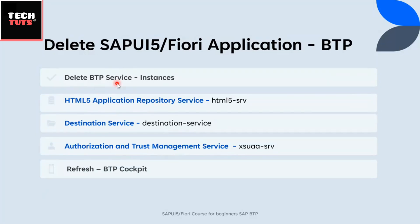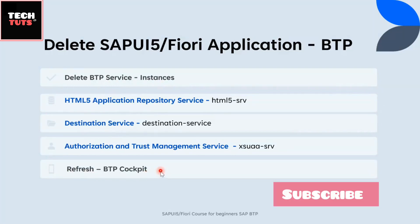Before we delete the services, we need to delete the instances created inside those services. Once we delete all these things, we need to refresh the BTP cockpit, and underneath the UI5 application section we will not see any application relevant to the one we deleted.